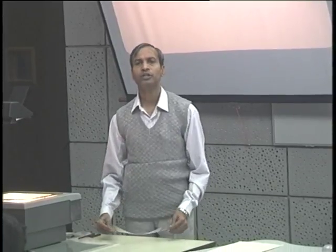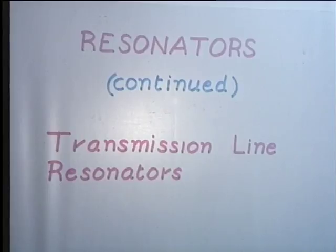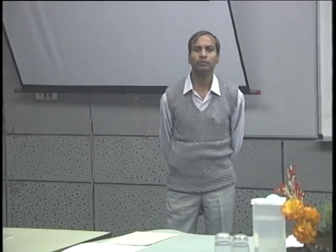Welcome to the 33rd lecture in the course Engineering Electromagnetics. In the lecture today, we continue our discussion on the general properties of electromagnetic resonators and then consider the properties of transmission line resonators. We recall that last time we considered the example of a parallel resonant circuit and made some conclusions of general significance applicable to resonators of various types and shapes required for work at different frequencies.